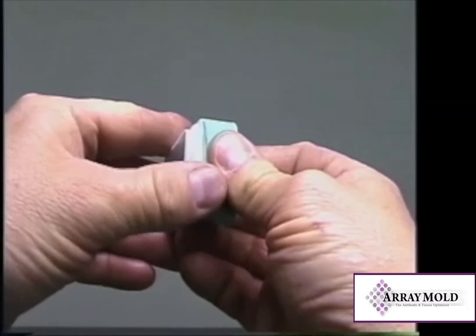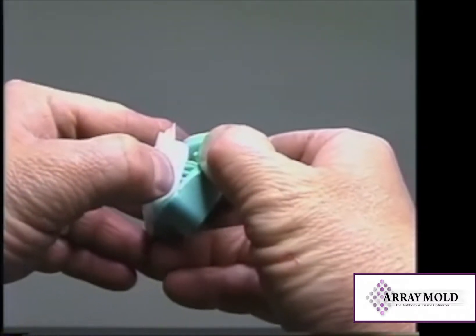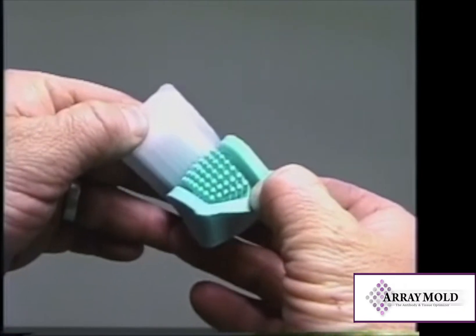Once the mold is cooled, pry it apart slowly. The punch rods inside the mold will stay intact for many moldings.